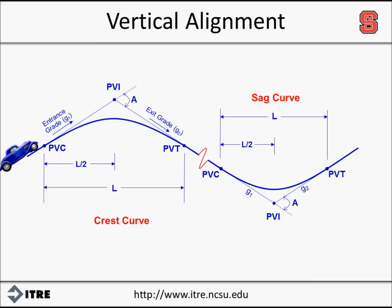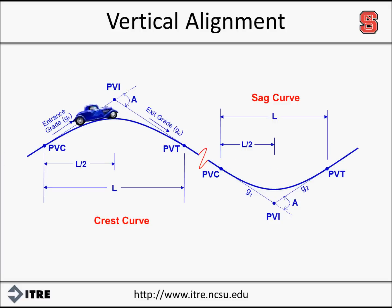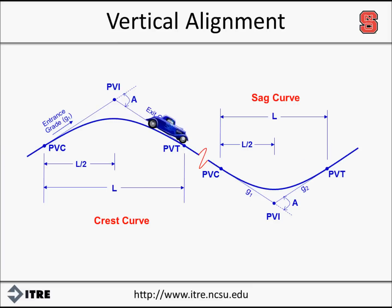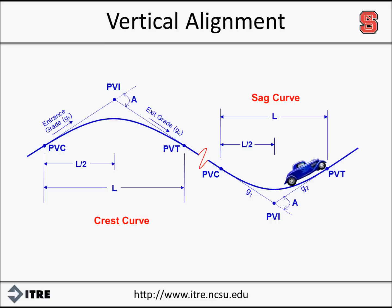For a symmetric parabolic curve, the length of the curve is evenly divided on each side of the PVI. In other words, the distance from the PVC to the PVI is half of the length of the curve, and the distance from the PVI to the PVT is also half of the length of the curve. The term A represents the algebraic difference in grades of G1 and G2.